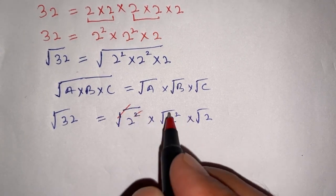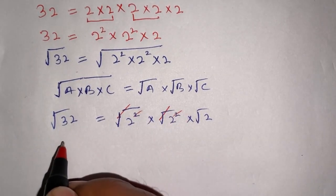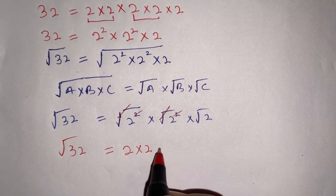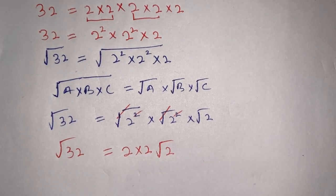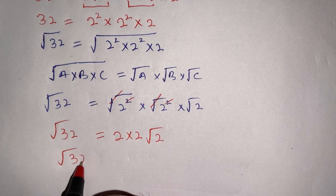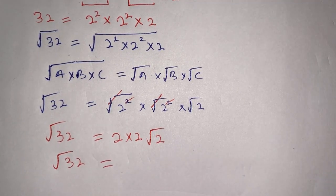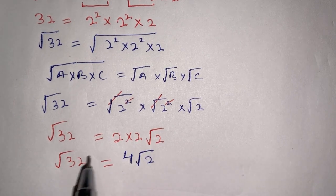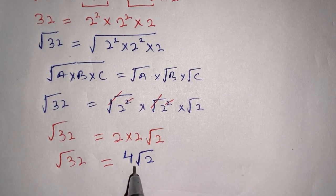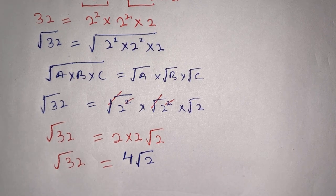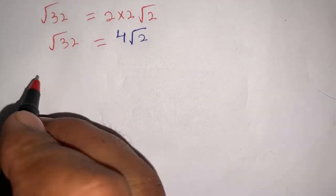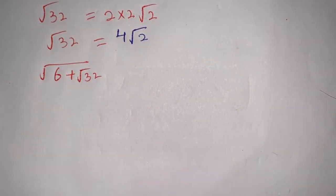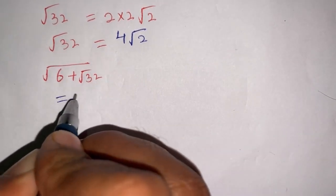Now we can cancel out each square root with its corresponding square. Thus square root of 32 equals 2 times 2 times square root of 2. That is 4 times square root of 2. So square root of 32 equals 4 square root of 2.